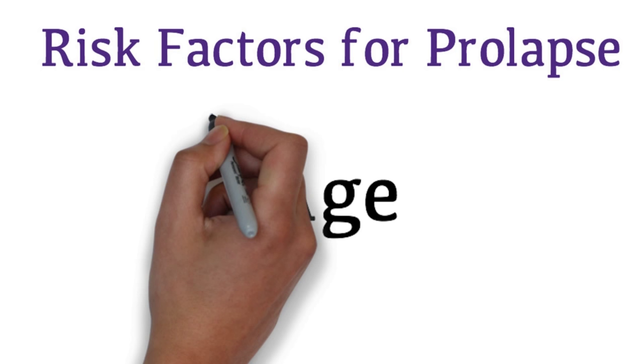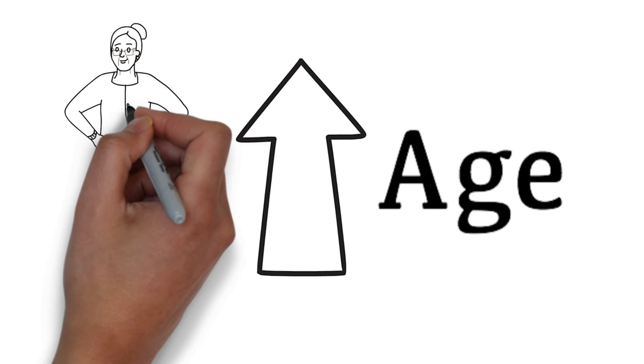Prolapse develops gradually over the years and the incidence of prolapse doubles every decade of life.